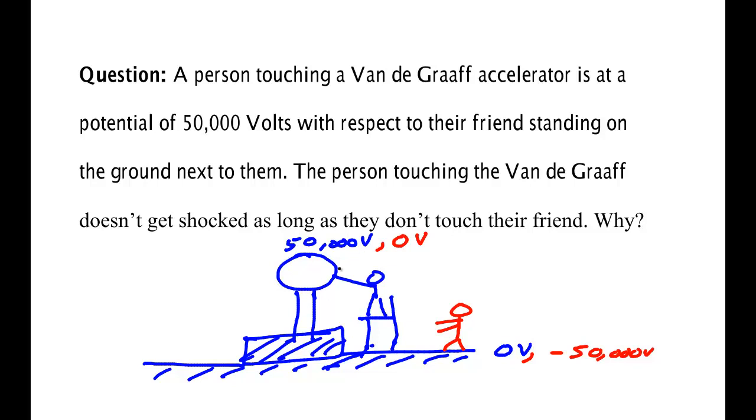This person is not going to get shocked because as long as they stay where every point of their body is at the same place. It's like being on the second floor of a building. You can walk around safely because every point you step is at the same gravitational potential. Here, each point on the dome turns out to be at the same electrical potential as does each person on this person's body.